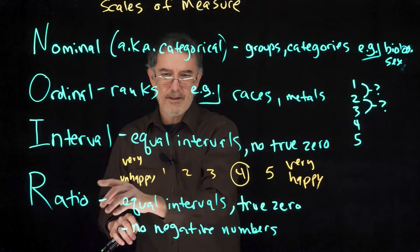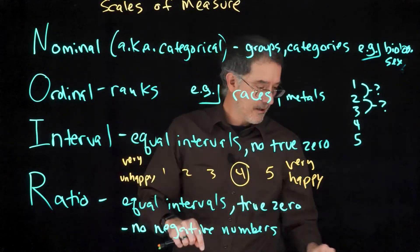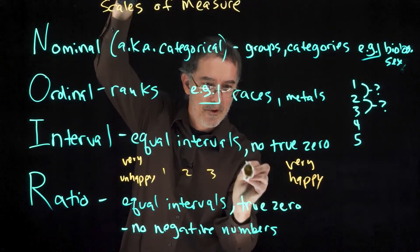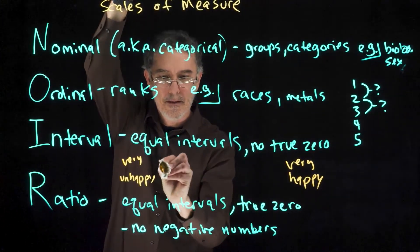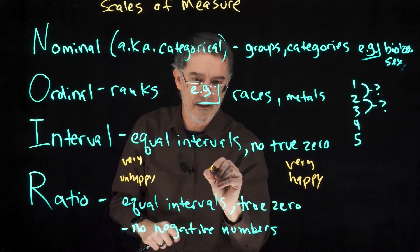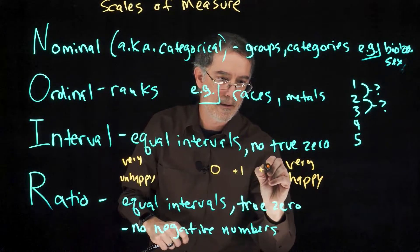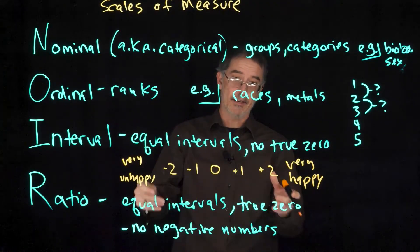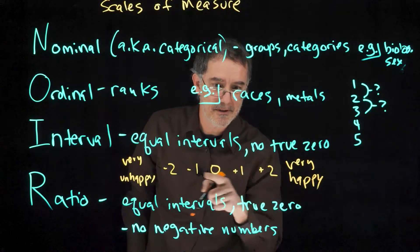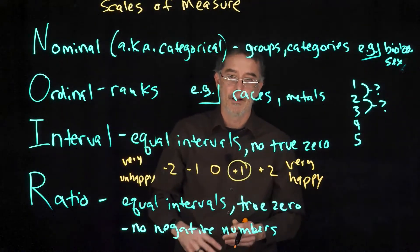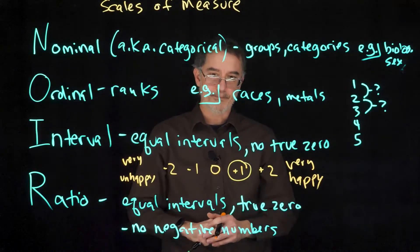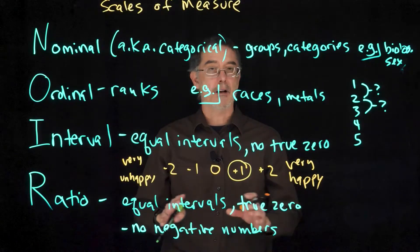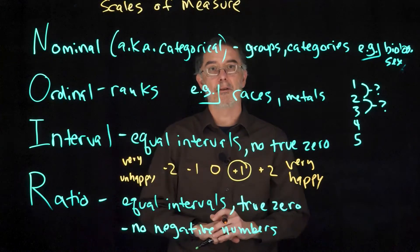Also, notice that they are not ratio. You cannot get below zero with the scale, but these numbers are completely arbitrary. The researcher, when they came up with their 1 to 5 scale, they could have instead made it like this. It is the exact same scale with the exact same information, but just written this way. This is what I would have put. Now, there are negative numbers. The self-report scale in psychology is something we will treat that as an interval variable.